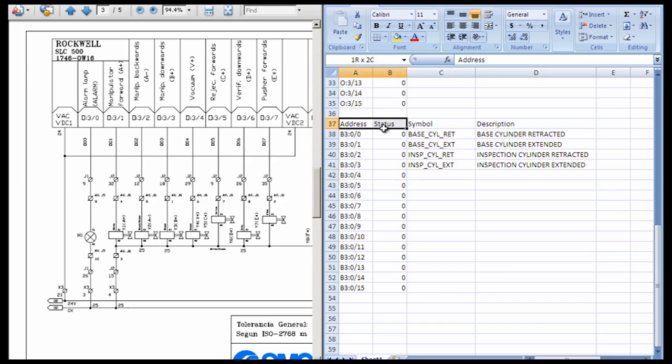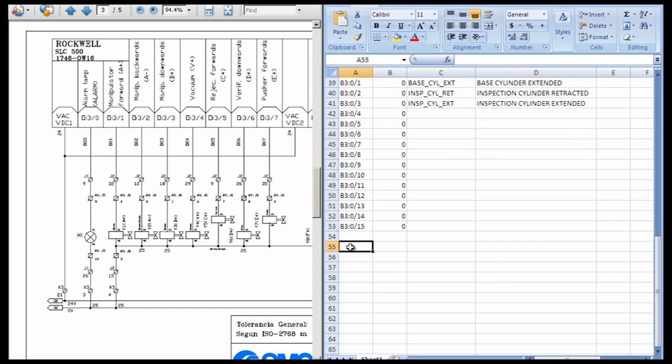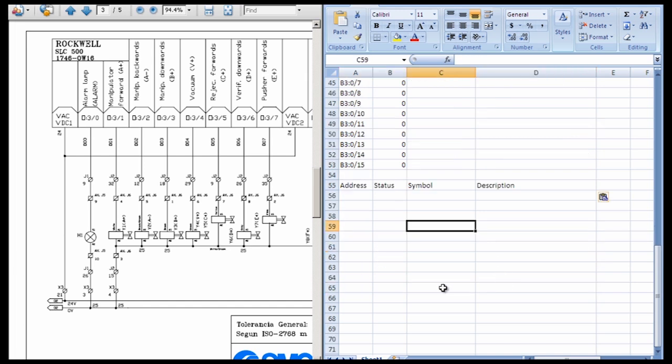So the next part of my programming that I do is I start defining what we call work bits. We know in our program that we're going to have certain things that have to happen and we have to program those. Machines don't go into auto just because you flip the switch to auto. It's been programmed to go into auto. Machines don't work in manual just because you flip the switch to manual. They've been programmed to work in manual.